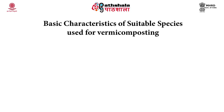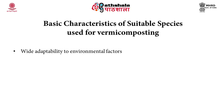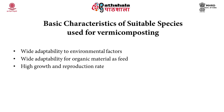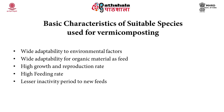There are about 500 species of earthworms in India, but out of these, only 20 species can be used for the purpose of vermicomposting. The earthworm species used should have wide adaptability to environmental factors, wide adaptability to organic materials as feed or substrate, high growth and reproduction rate, high feeding rate, lesser inactivity period to new feeds, and should be compatible or tolerant with other earthworms if a polyculture system of vermicomposting is used.